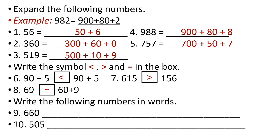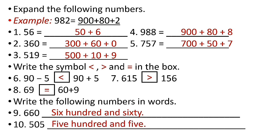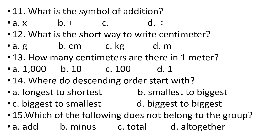Next: write the following numbers in words. How do you write numbers in words? Example, number nine: 660 — you write it as six hundred sixty. Number ten: 505 — you write five hundred and five. Number eleven: listen carefully — what is the symbol of addition? You have to choose the right answer.